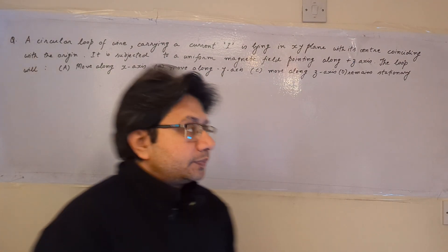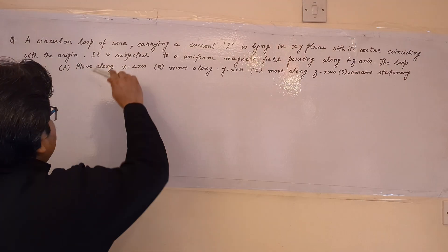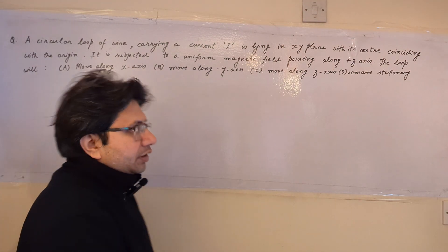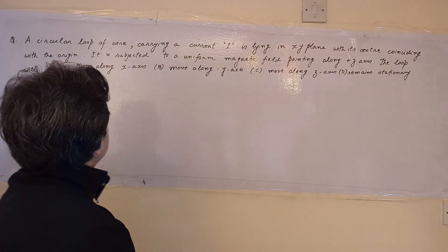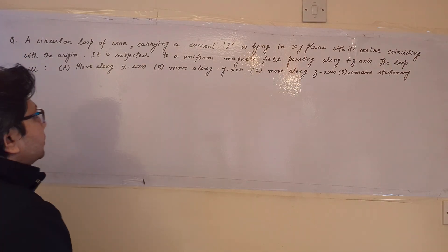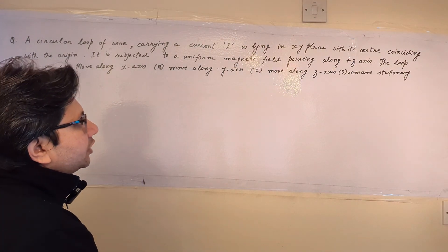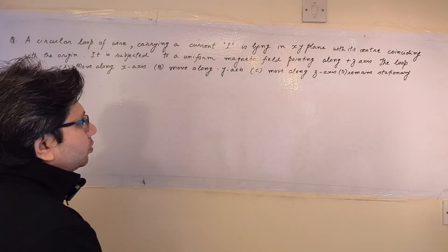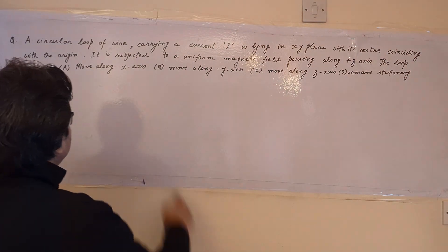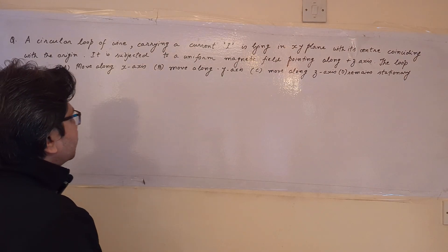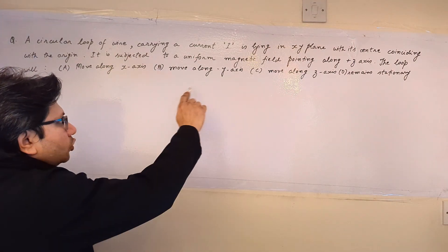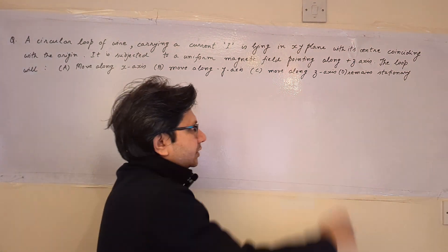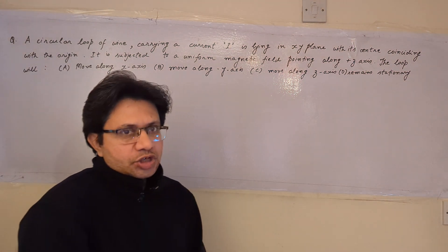Hello students, the question is: a circular loop of wire carrying a current i is lying in the xy-plane with its center coinciding with the origin. It is subjected to a uniform magnetic field pointing along the plus z direction. The loop will: option a, move along x-axis; option b, move along y-axis; option c, move along z-axis; option d, remains stationary.